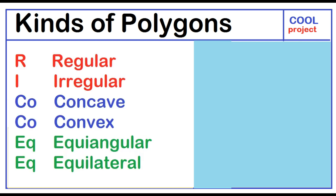Again, the kinds of polygons are regular, irregular, concave, convex, equiangular, equilateral.